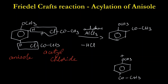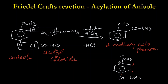For the ortho isomer, the name is 2-methoxy acetophenone, because this part is acetophenone and methoxy is attached at the second position. For the para isomer, counting carbons — first, second, third, fourth — methoxy is attached at the fourth carbon, so the name is 4-methoxy acetophenone.